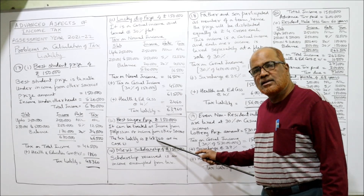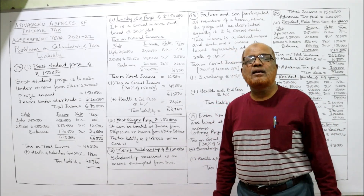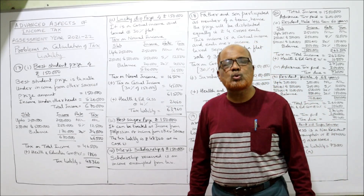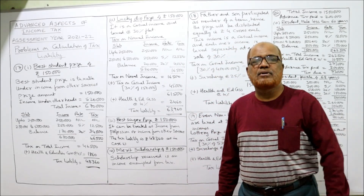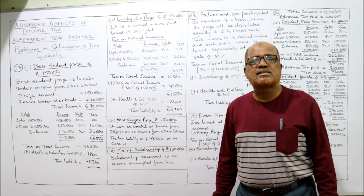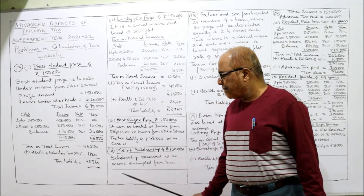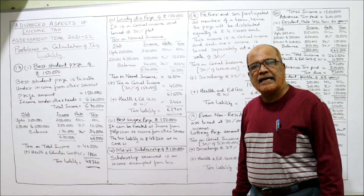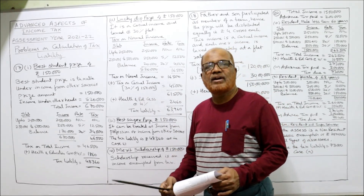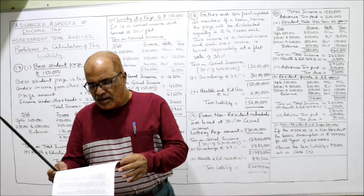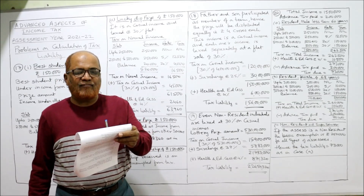Last case: merit scholarship received. The Income Tax Act says if a student receives a merit scholarship, it is fully exempted from tax. That's the end of problem number 17. Now moving to problem number 18: as a member of a team, father and son participated in KBC program conducted by a TV channel.